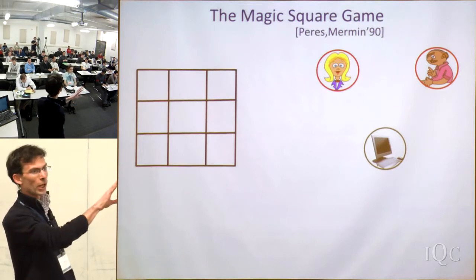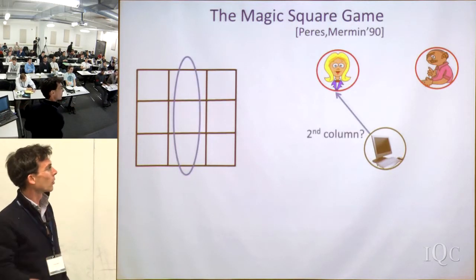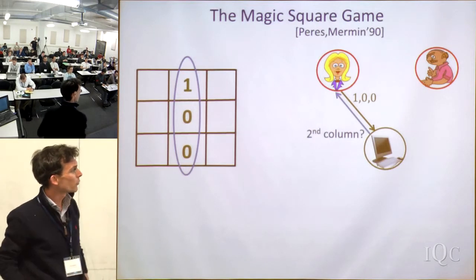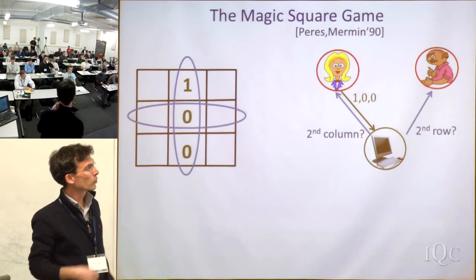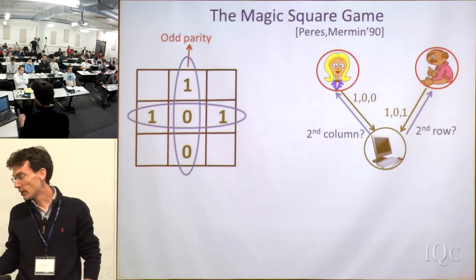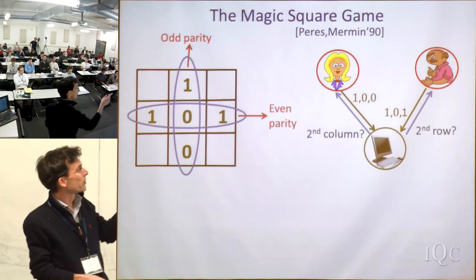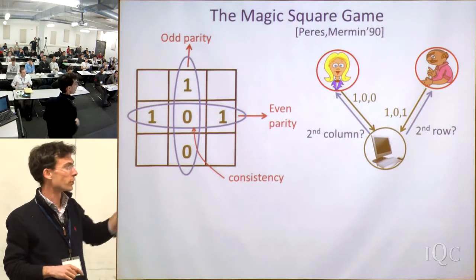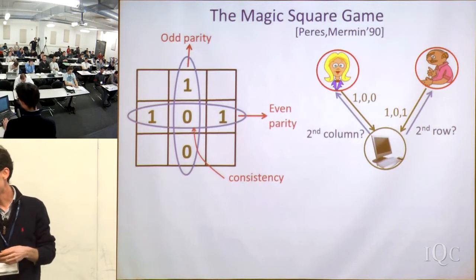The game is parametrized by this square. The referee first picks one of the three columns at random and sends it to Alice, asking her to return bit values for the cells in that column. He also picks one of the rows at random and sends that to Bob, asking Bob to fill in values for the cells in that row. There are three constraints: Alice's three bits should have odd parity, Bob's three bits should have even parity, and at the intersection of Alice's column and Bob's row, their values should be the same.